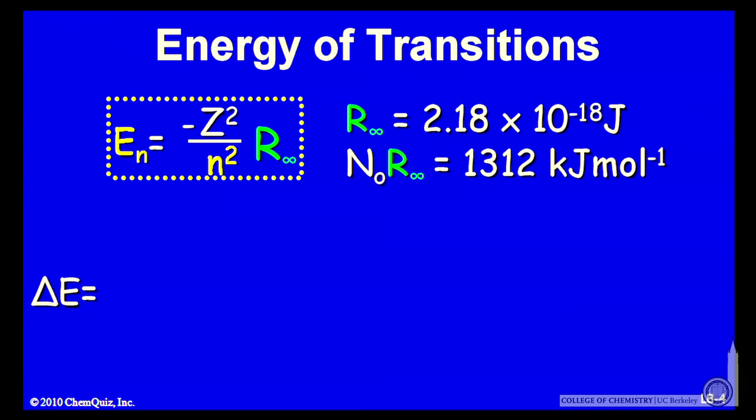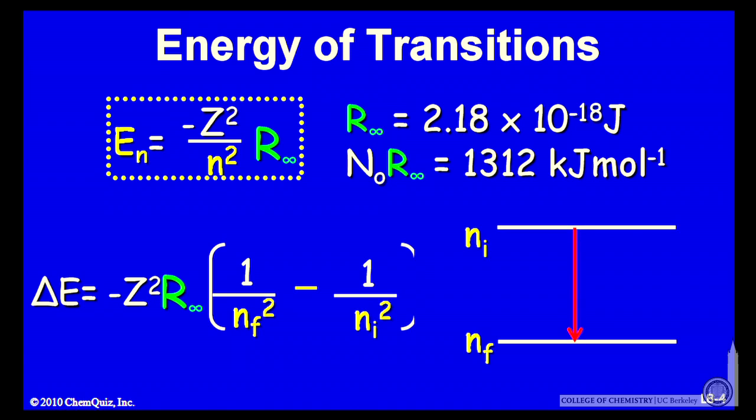So if I'm going to go from one n to another, the change in energy is given by minus z squared R∞ times the final state minus the initial state.